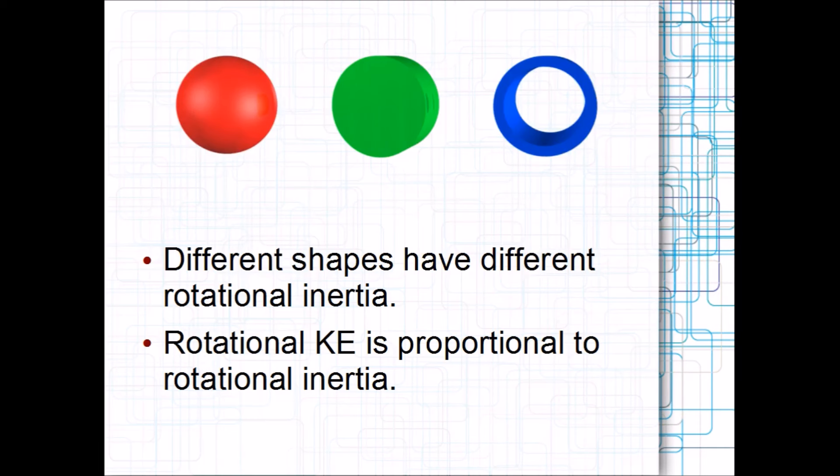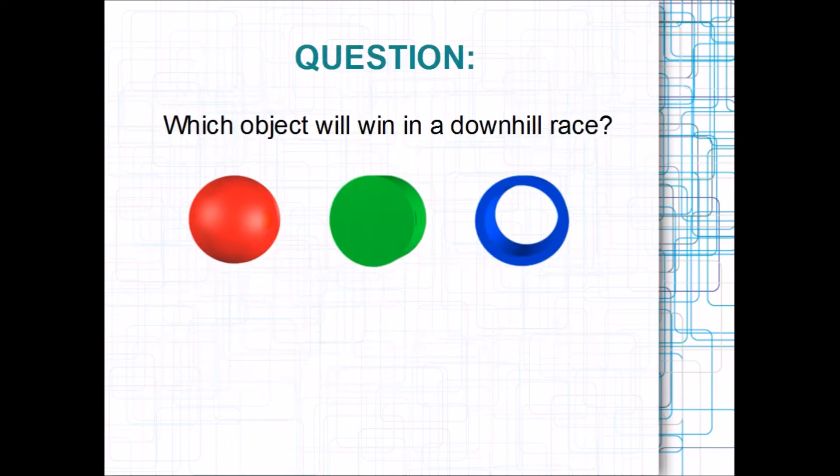I should tell you now that, of these three shapes, the hollow cylinder has the highest rotational inertia. Now, a question. Which shape will win in a straight downhill race?